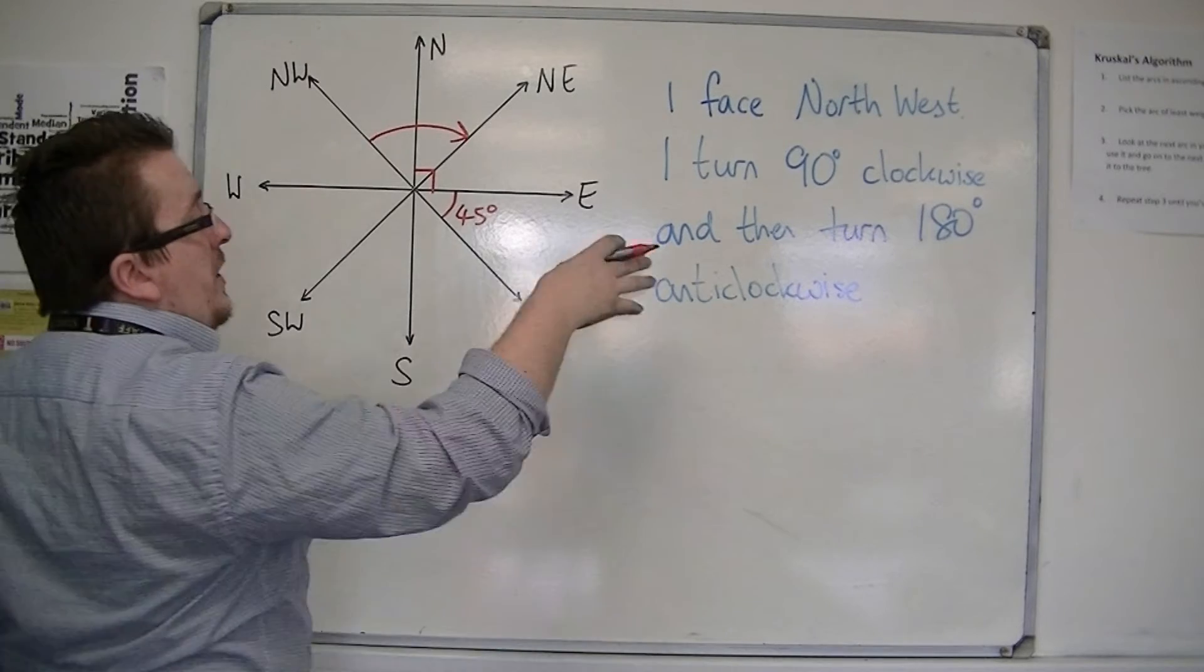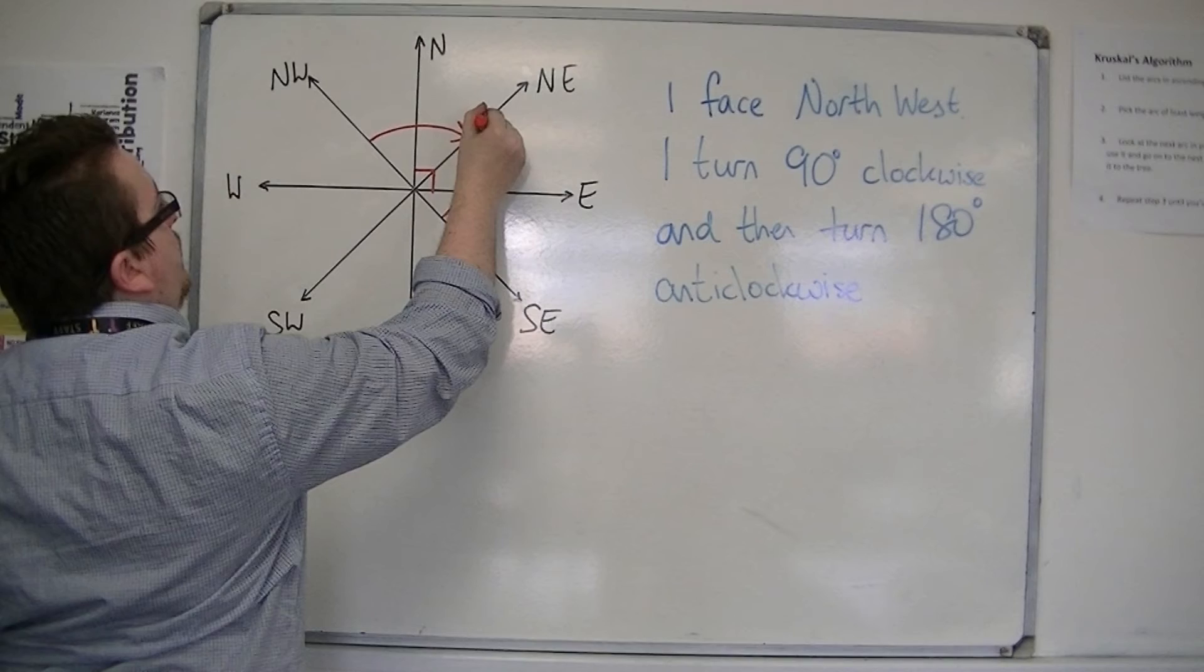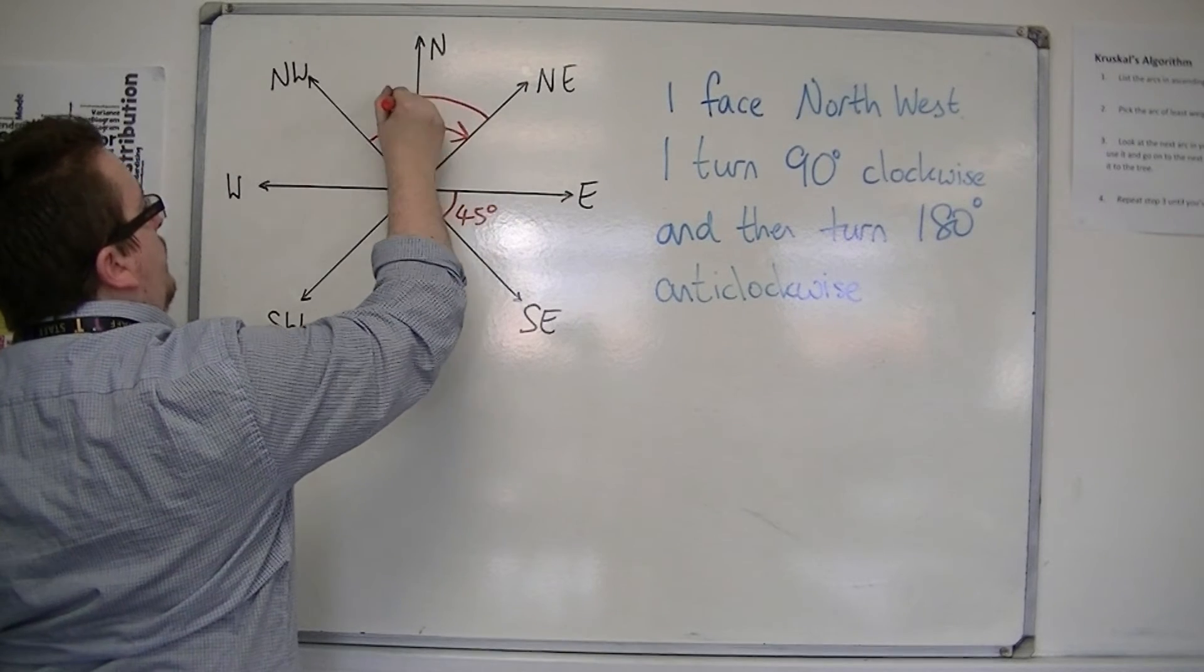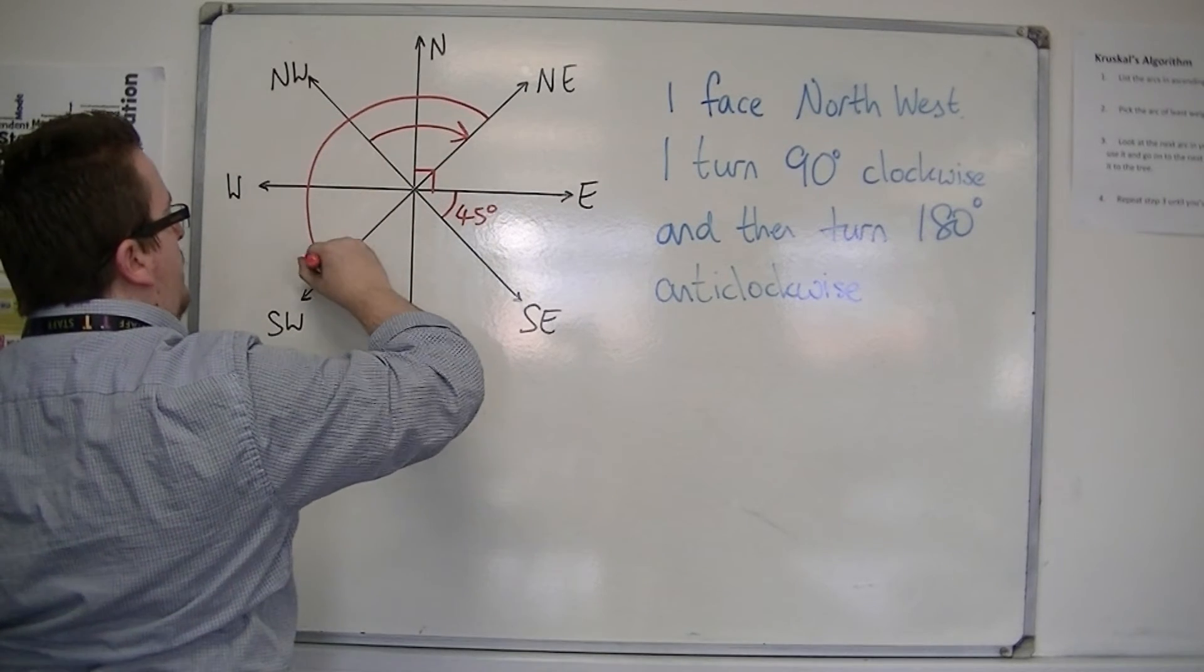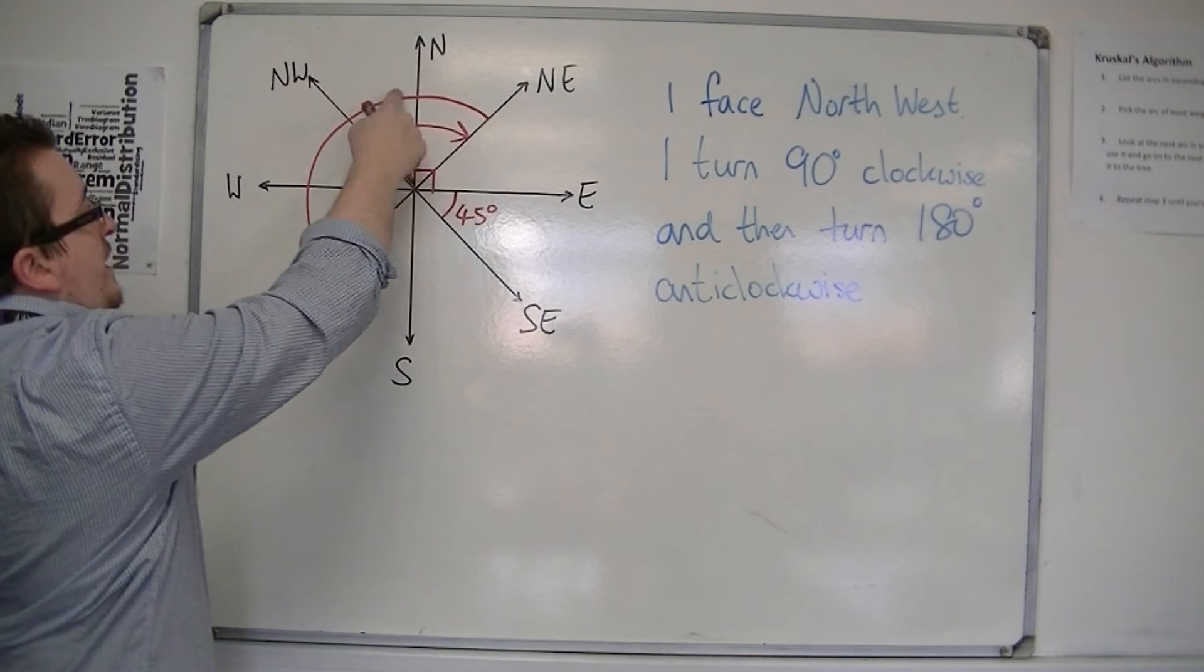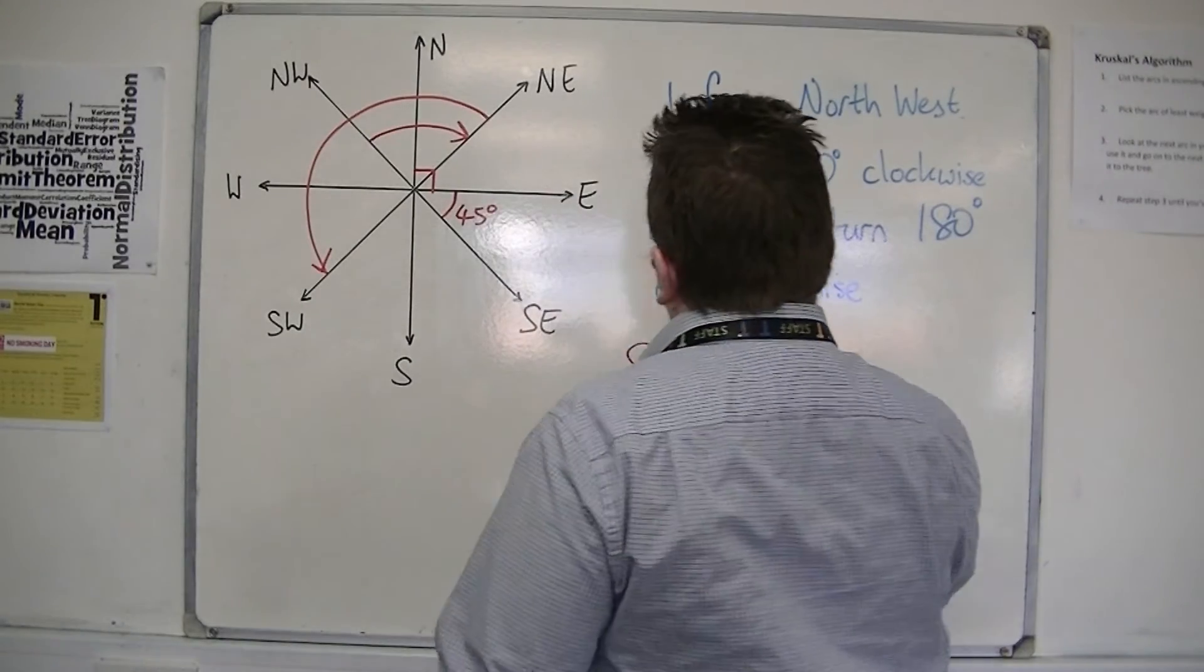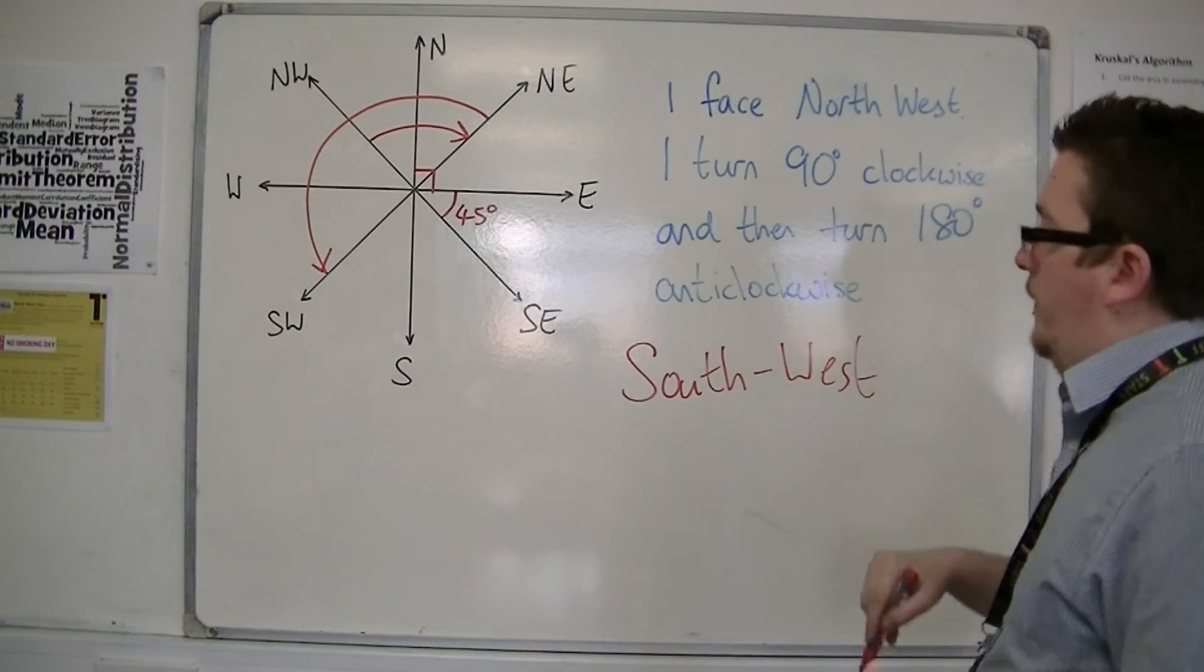And then I turn 180 degrees anti-clockwise. So I spin round anti-clockwise, which is going round the opposite direction. And I would cover from north-east round to south-west. So I will end up standing towards south-west.